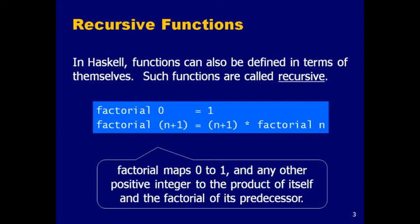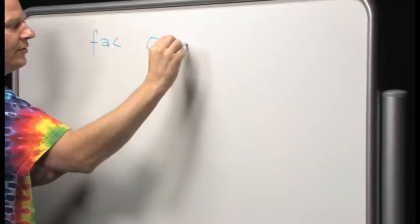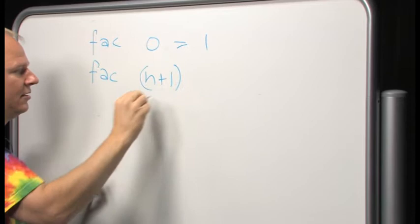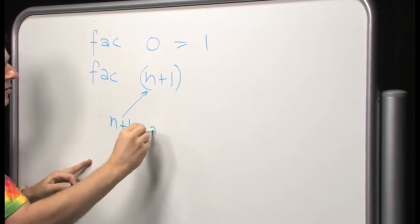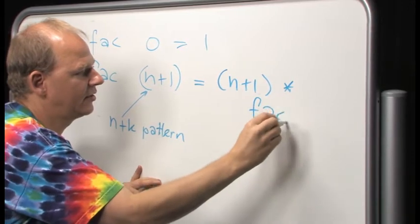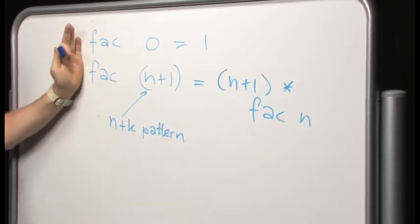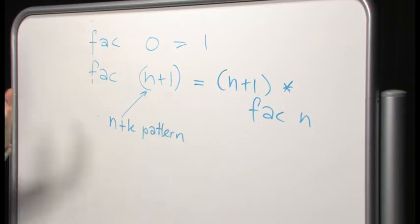Just as I've shown you how to write product using recursion, we can write the factorial function itself using recursion. Factorial of 0 equals 1, and the factorial of n+1 — remember from lecture 4 we called this the n+k pattern — equals n+1 times the factorial of n. Here I define factorial using pattern matching directly on numbers, and the recursive structure is very similar to the recursive structure of product.